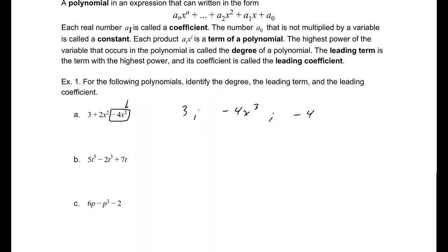Part B, our degree is 5, because that is the highest power. So, that term, 5t to the 5th, that is our leading term. And then the leading coefficient is the constant attached to that, the constant multiplied by that variable.